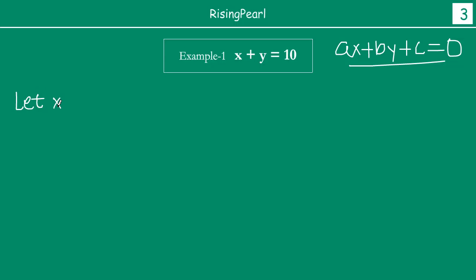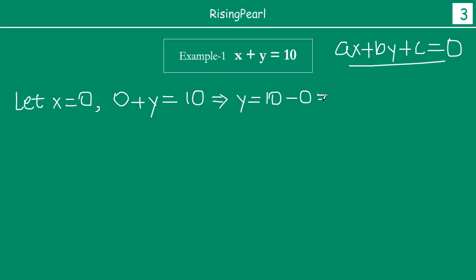We will make some assumptions. Let x equal to zero. If x is zero and we put it in the equation, we get 0 plus y equal to 10, which means y is equal to 10 minus 0, which is equal to 10. So if you take x as 0 and y as 10, putting x equal to 0 and y equal to 10 makes the left hand side 10 and right hand side 10. So the ordered pair (0, 10) is a solution to our equation.